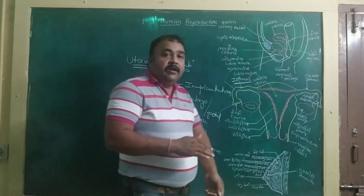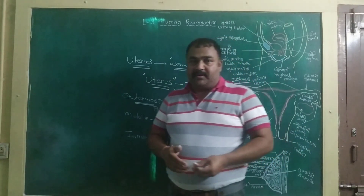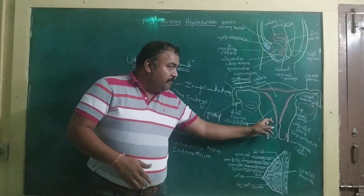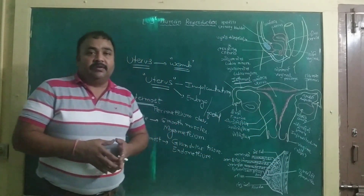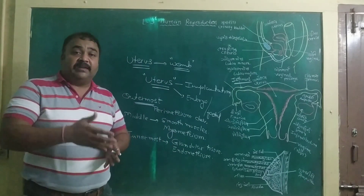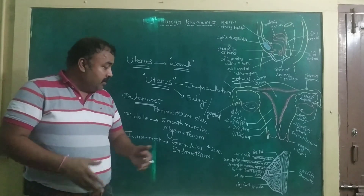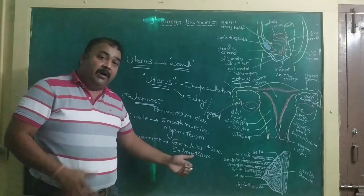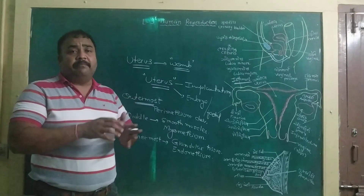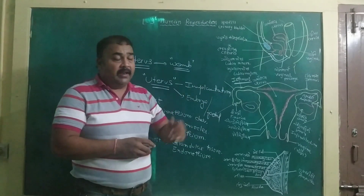During delivery, during the birth of a child, the myometrium undergoes contractions which facilitate the delivery of the baby. Whereas the endometrium undergoes cyclic changes during the menstrual cycle of the female.